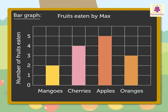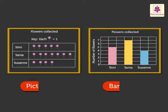From the information obtained we can say how many fruits Max ate in all, how many more apples he ate than mangoes, and so on. Hence we can obtain a lot of information from a bar graph too. Hope it was fun to learn the different methods of data representation.